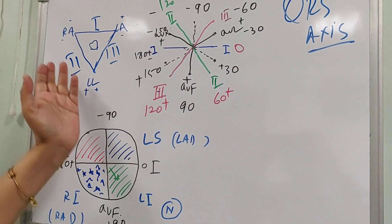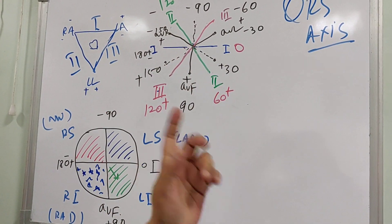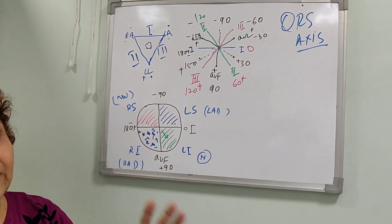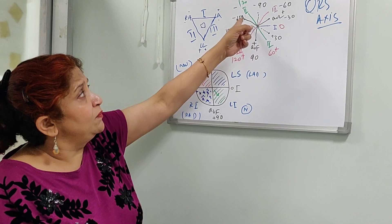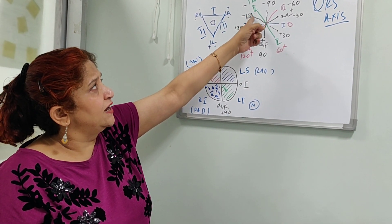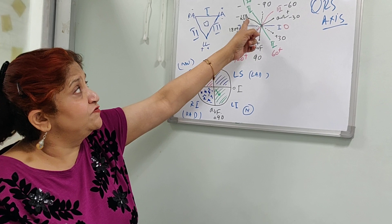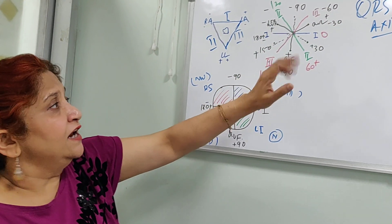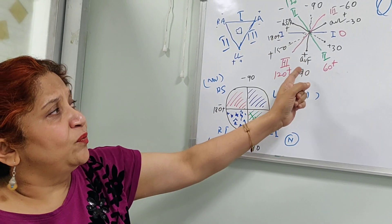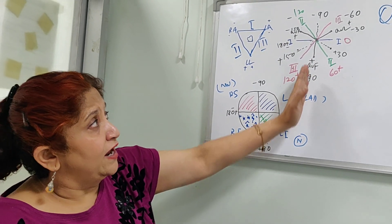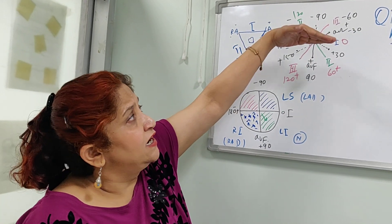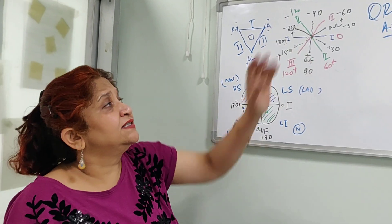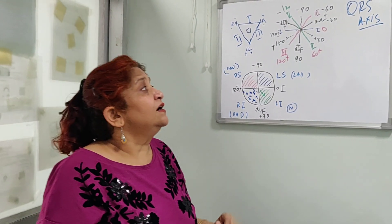In between the bipolar leads, we add the unipolar limb leads, so all leads have a 30-degree relationship among themselves. AVR has its positive pole at minus 150 degrees. AVL has its positive pole at minus 30 degrees. AVF has its positive pole at plus 90 degrees. AVF is straight down and Lead 1 is straight across, forming the complete hexaxial system of leads.